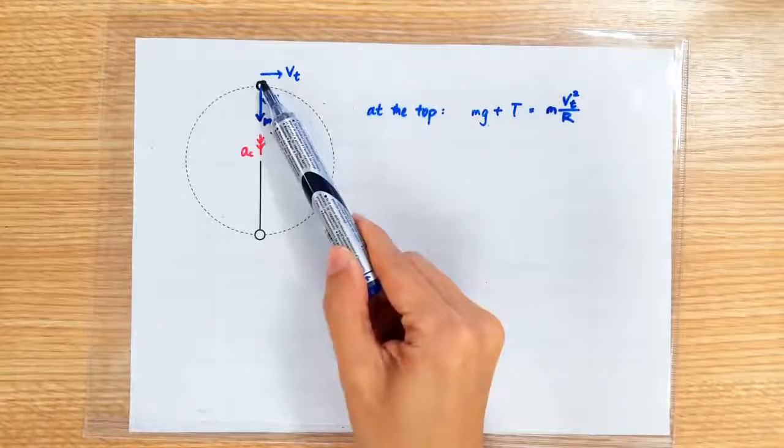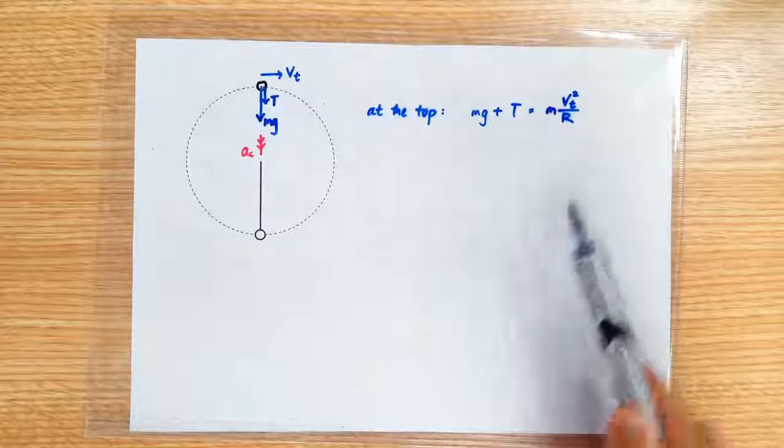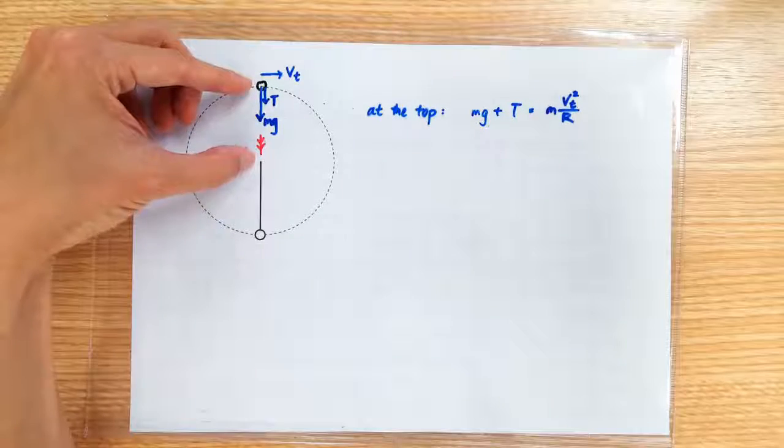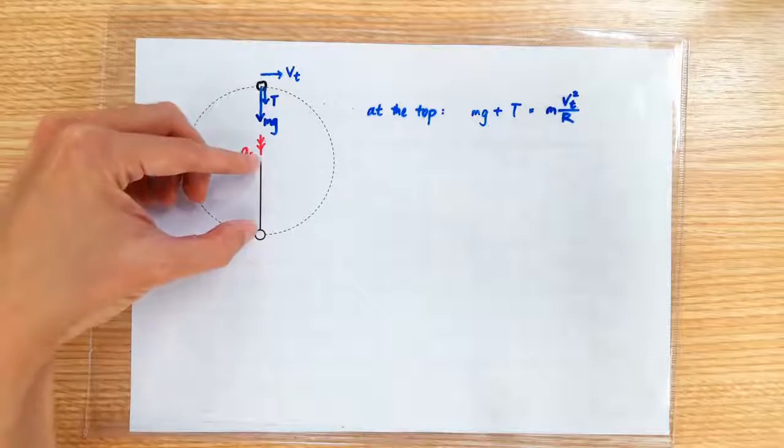So small m is of course the mass of the stone and big R is the radius of the circular motion, which is this length here, which is of course also the length of the rope.